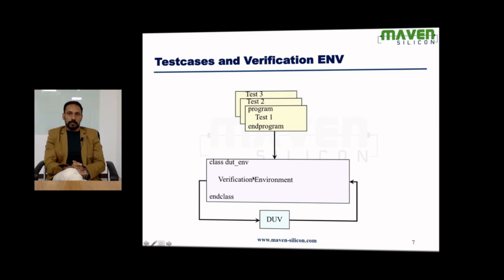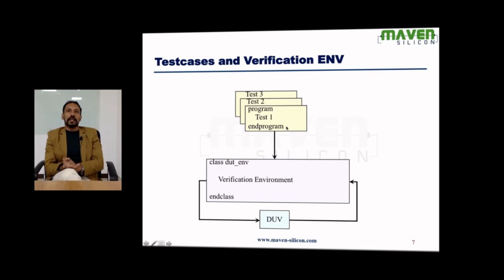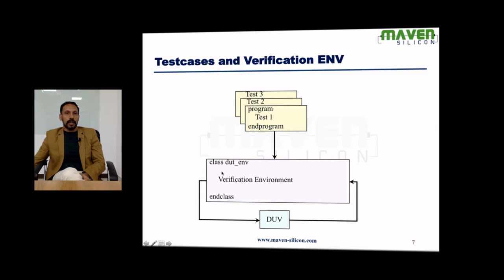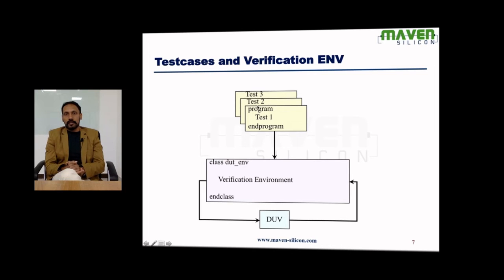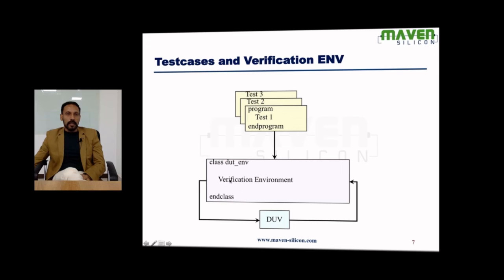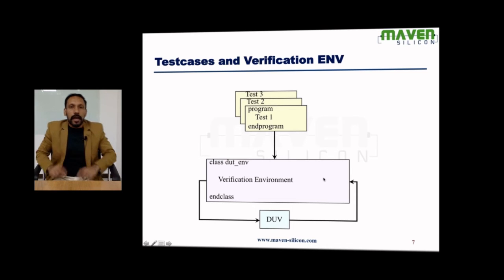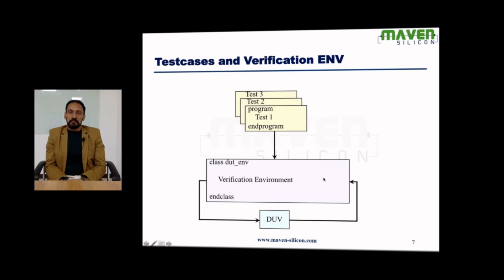For example, if the design is a router, test case one might say: generate 100 small packets. The test bench generates 100 small packets, drives them, collects the outputs, and compares the output packets with expected packets. Test case two might say: generate 10 big packets — entirely different. The test bench generates 10 big packets, drives them, collects all outputs, and compares the output packets.